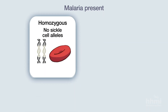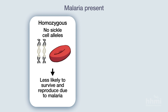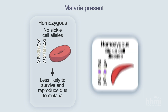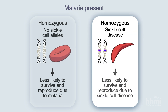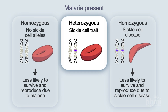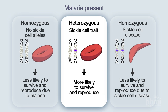People with no sickle cell allele were less likely to survive and reproduce due to malaria. People with two sickle cell alleles were less likely to survive and reproduce due to sickle cell disease. But people with one sickle cell allele were more likely to survive and reproduce. Tony Allison had discovered the first clear example of natural selection in humans.